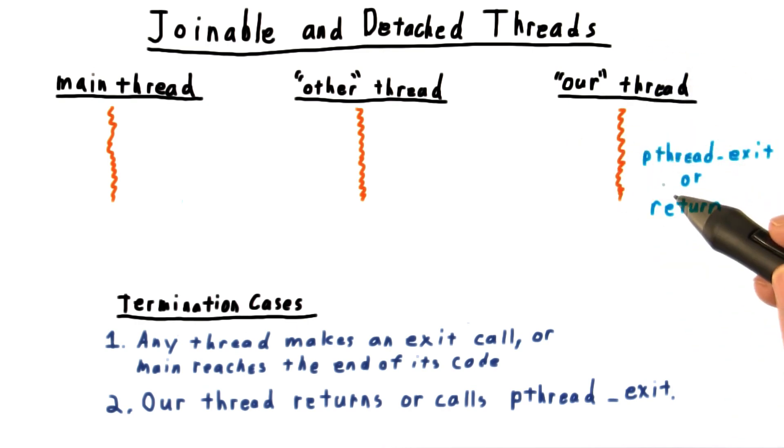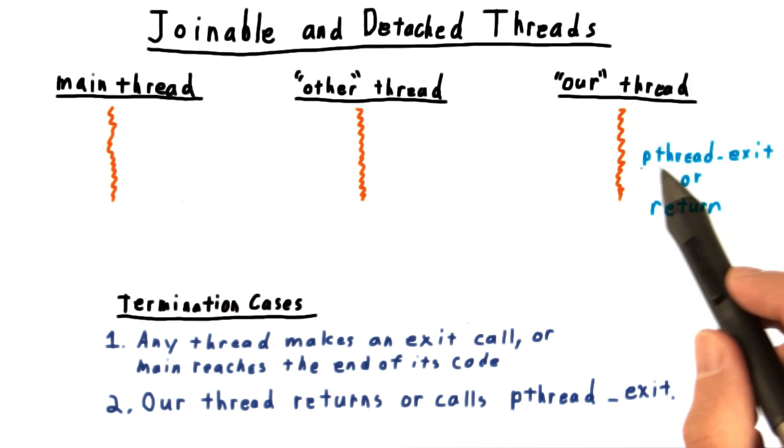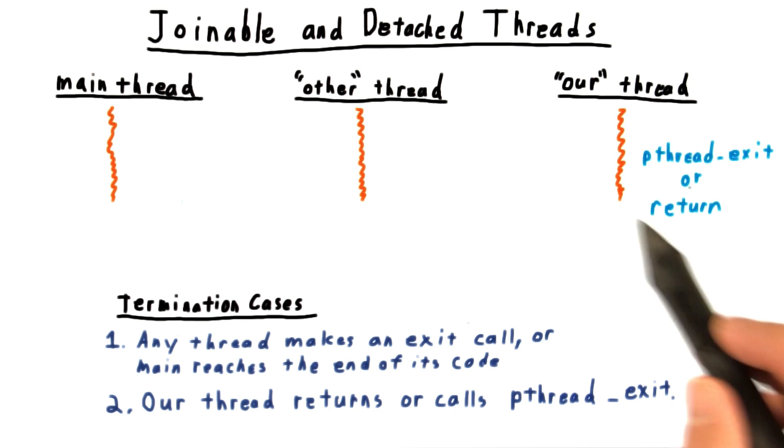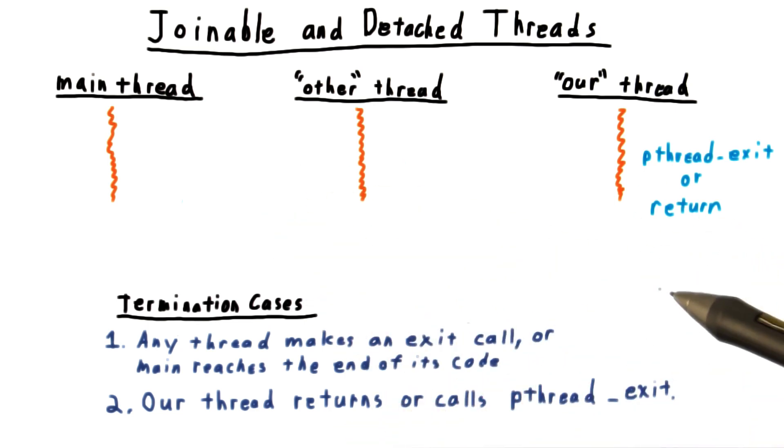The second way our thread might terminate is if it calls pthread_exit or executes a return statement. The distinction between joinable and detached threads is important for the second case here.